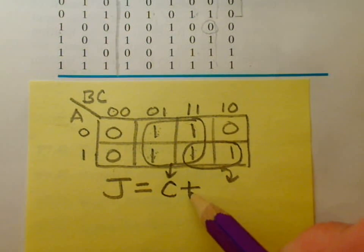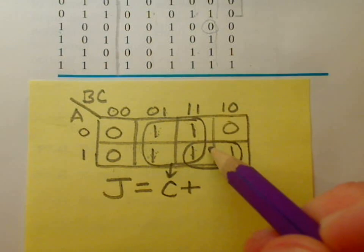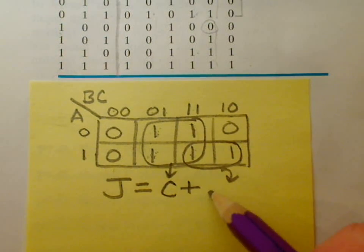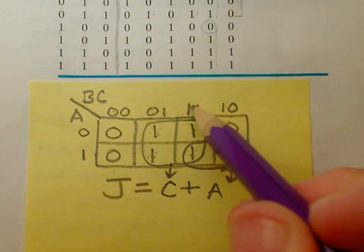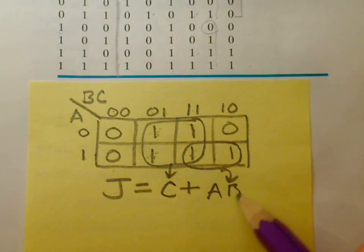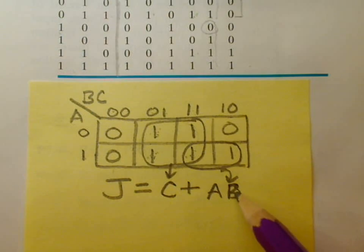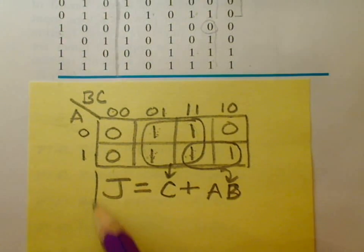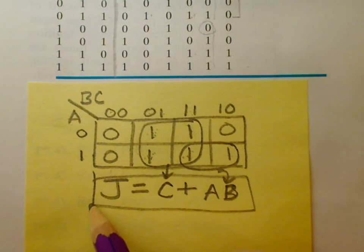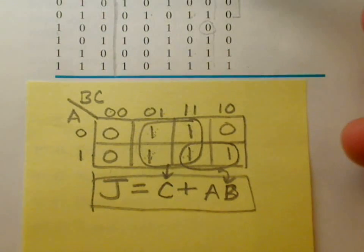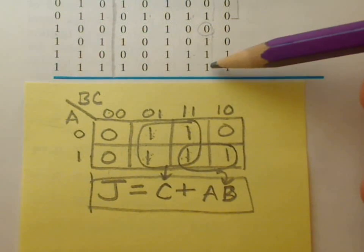Then we put an OR for the next circle. We notice A remains high, so we put A and B remains high, and C changes as you go through these terms right here. So it's not a factor in that term, so this is the simplest equation that satisfies this truth table.